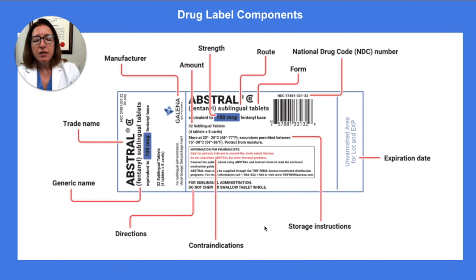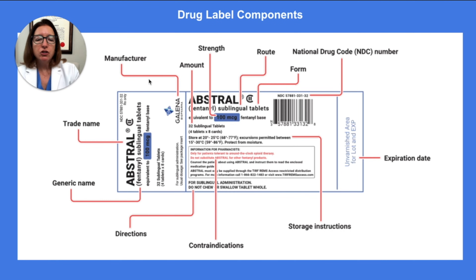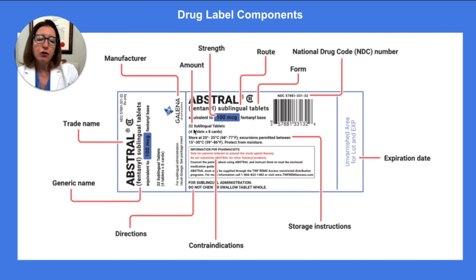On this drug label on the screen, we have the generic name of the medication pointed out, which is fentanyl. We have the trade name pointed out here as well, which is Abstral. The manufacturer is Galena. The amount is the amount of the medication that is supplied in the package — in this case, we have 32 sublingual tablets, so there are 32 tablets in this particular package.